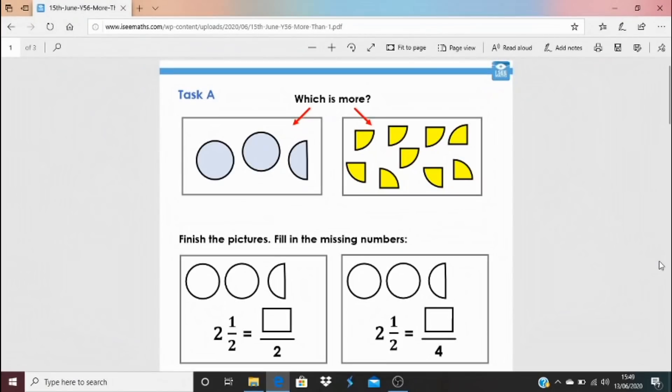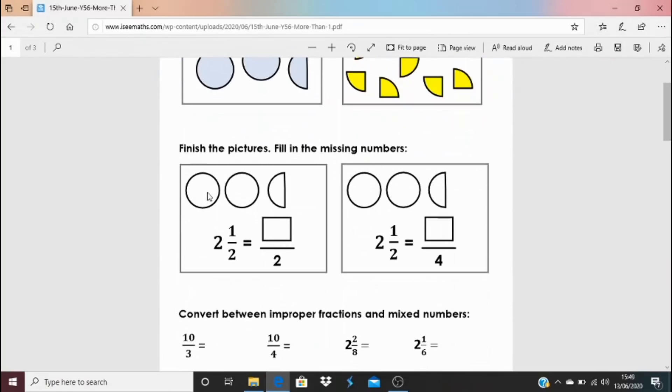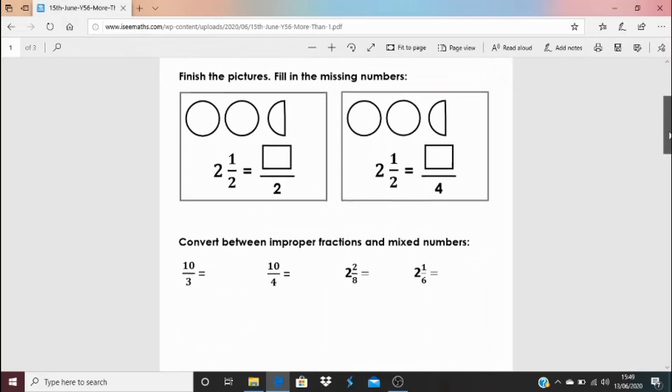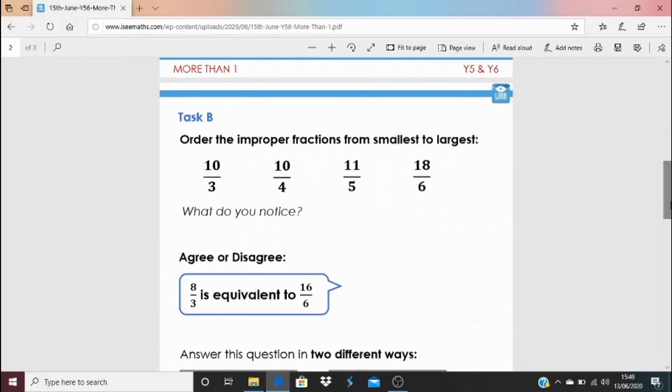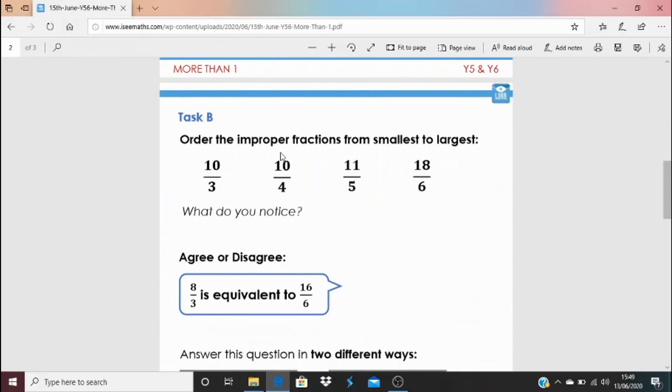And for today's task, click on the blue link underneath the video. We've got a task A and a task B. So we've got which is more from these pictures here. And then finish the pictures. So see if you can finish by drawing the appropriate lines on there. And work out how many halves and how many quarters. And then can you convert between improper fractions and mixed numbers? So for these two questions, give these fractions as mixed numbers. And for these mixed numbers, give them as improper fractions.